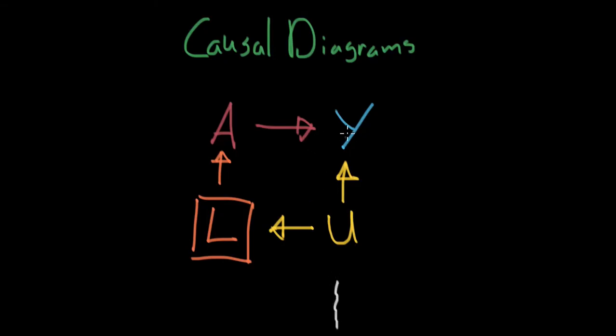So we would first note our variable of interest. Let's say Y is our variable of interest. We'd start on one side with Y. We'd choose which effect we'd like to go through. Let's say we want to go through A. And we'd say Y is affected by A, which is in turn affected by L, which is in turn affected by U.